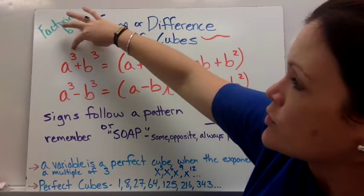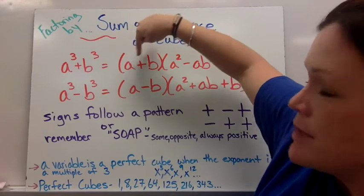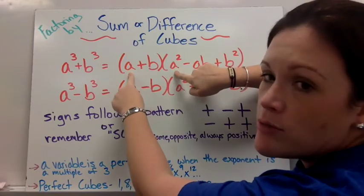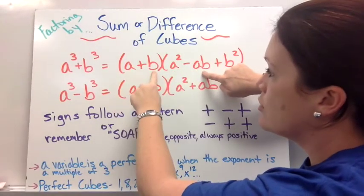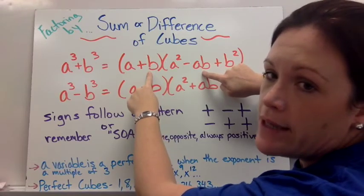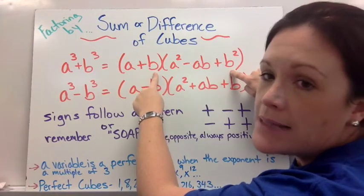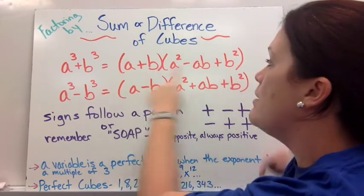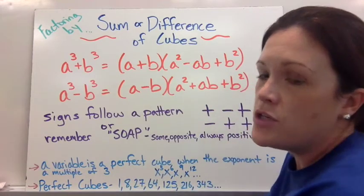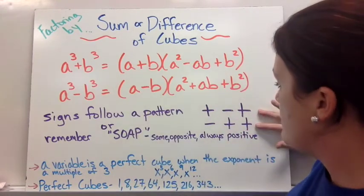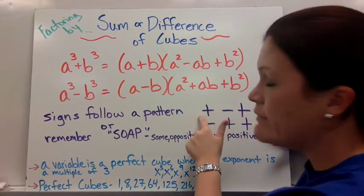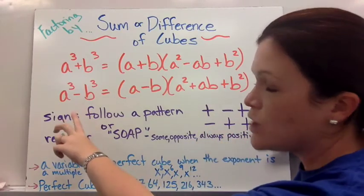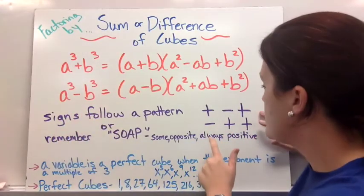So you get the cube root of each term you were given makes up your binomial. Your first term in your trinomial is the first term in the binomial squared. The middle term are the two terms from the binomial multiplied together. And the last term is the last term in the binomial squared, gives you the last term in the trinomial. That pattern works for sum or difference of cubes. Your signs will always follow this pattern: plus minus plus, so if you're given adding, it follows that pattern. Minus plus plus, so if you're given subtraction or difference of cubes, it'll always follow that pattern.